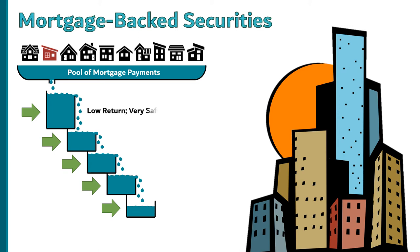Investors who bought into the top tranche got a low rate of return but the investment was very safe, because they would be paid first. Investors who bought into the bottom tranche got a higher return but it was riskier — if too many people in the mortgage pool defaulted, there wouldn't be enough money to pay investors in the bottom tranche. Those who didn't want to take that risk could take the lower rate of return and essentially have a sure thing.